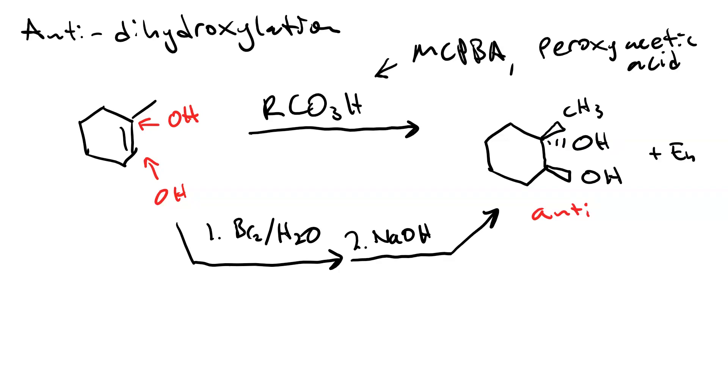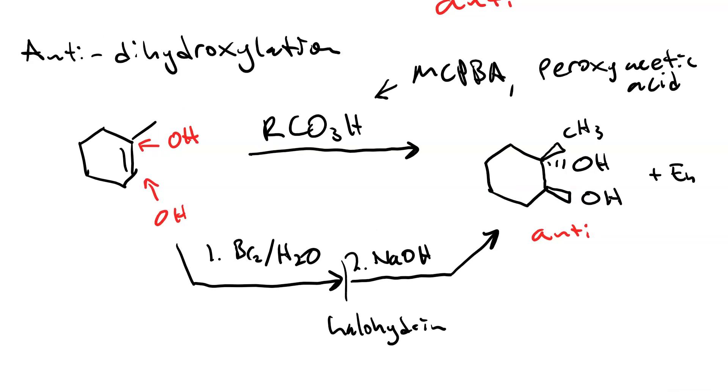You can also get the same result, anti-dihydroxylation, if you go through a two-step process, where first you make a halo hydrin by using bromine molecule, fluorine molecule, or iodine molecule in water. So we'll have a halo hydrin. And then, reacting that with sodium hydroxide gives the epoxide, which then opens up to become the anti-diol.